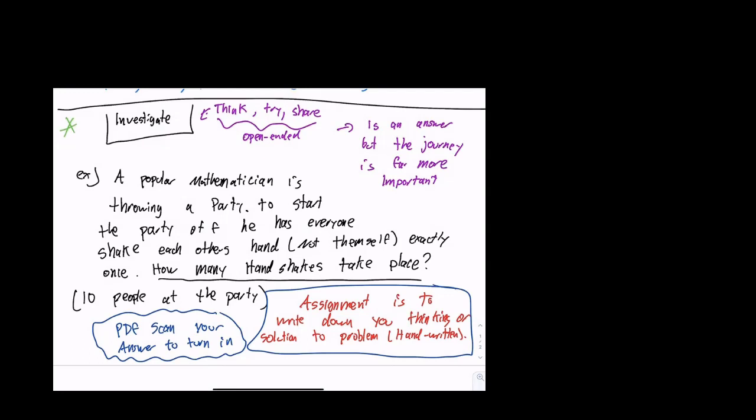So, a popular mathematician is throwing a party. To start the party off, he has everyone shake each other's hand, not themselves. Exactly once. How many handshakes take place? There are 10 people at the party.